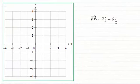Hi. In this video I want to talk about position vectors. First, let's suppose we had a vector AB which equals 3i plus 2j.